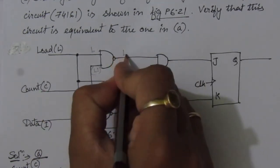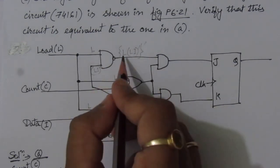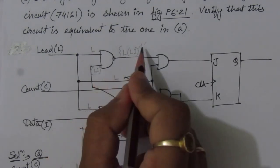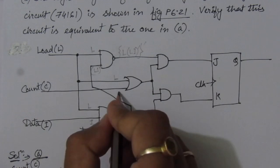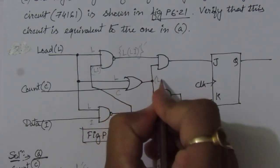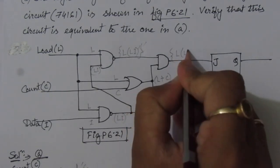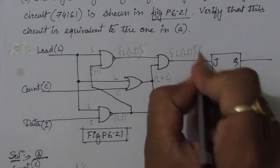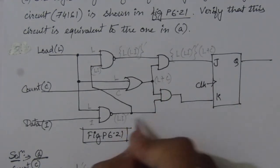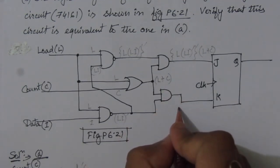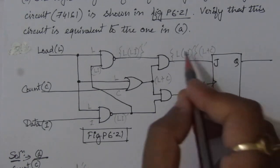The next NAND gate has inputs L and (LI0)', giving (L·(LI0)')' with a bubble on output. Meanwhile L and C feed an OR gate producing L+C. So the final NAND gate output Z = (L·(LI0)')' · (L+C), and for K we have K = (LI0)' · (L+C). These are the two expressions from part B.